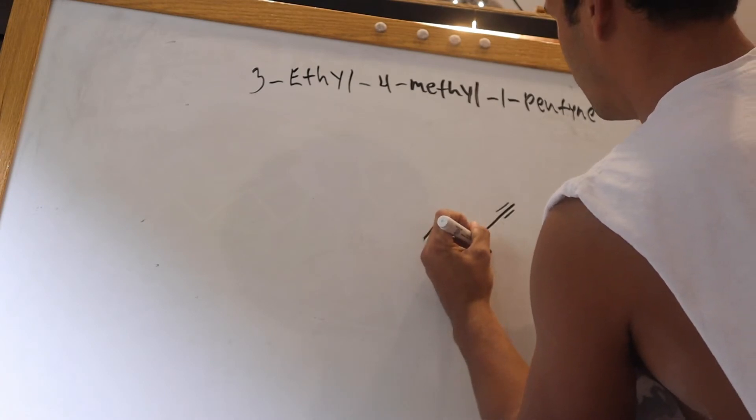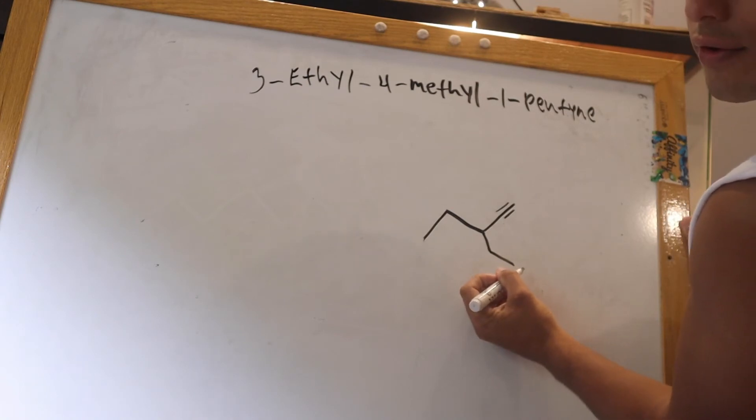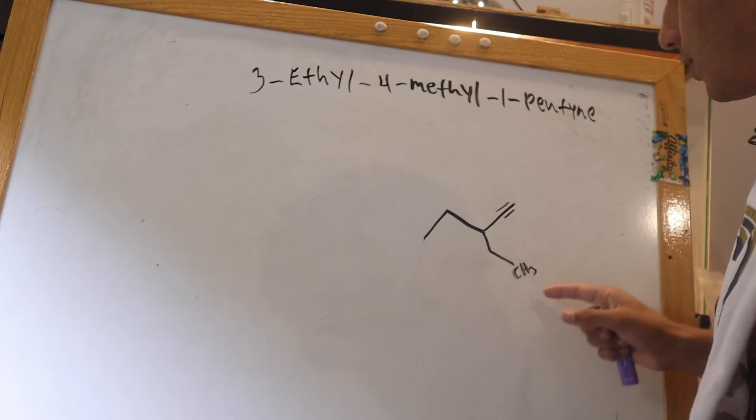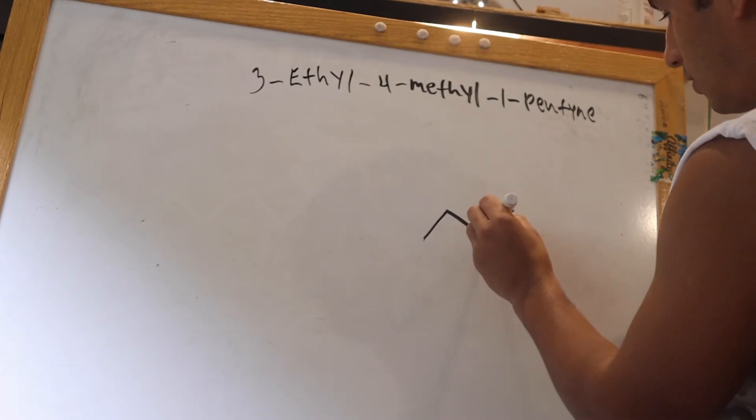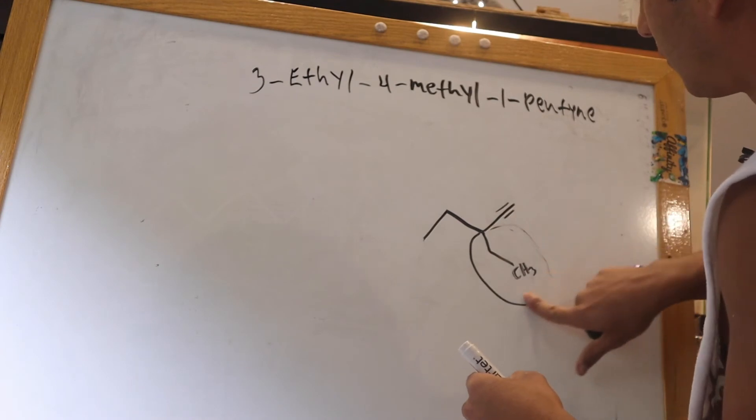There's a CH2 and a CH3. CH2 over here, CH3 over here. I'm going to write it here just so you guys can see. So this is that ethyl group. Okay?